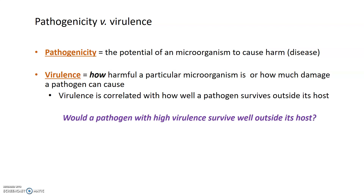The virulence of pathogens is typically correlated to how well they survive outside their host. If a particular pathogen is extremely virulent or harmful to its host, it runs the risk of killing that host before it can be transmitted to a new one. A pathogen with very high virulence would be expected to survive well outside the host in the external environment, since it will likely need to survive there after killing a host and before finding a new one. There is some correlation between modes of transmission, how well pathogens survive in the external environment, and how virulent those pathogens are.